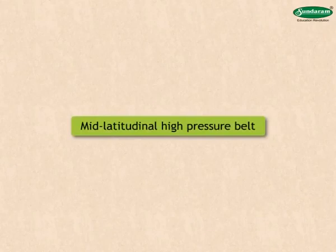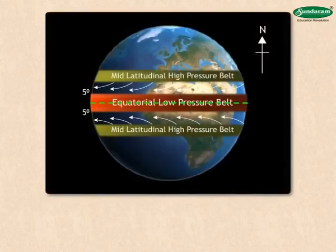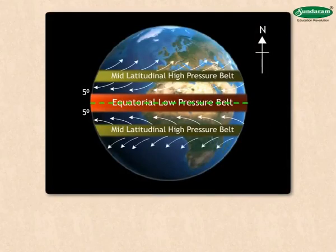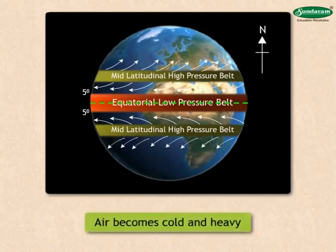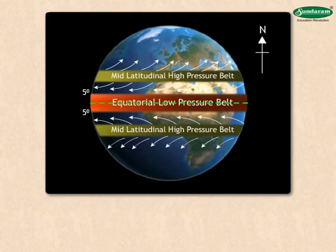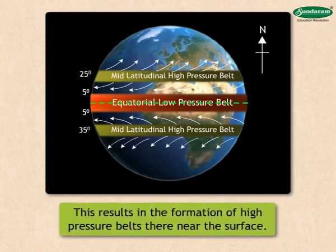Mid-latitudinal high pressure belt. Air which has risen from the equatorial region flows at a higher altitude towards the polar region. Due to the low temperature at that altitude, air becomes cold and heavy. This cool air descends between 25 degrees and 35 degrees latitudes in the northern as well as the southern hemispheres. This results in the formation of high pressure belts near the surface.